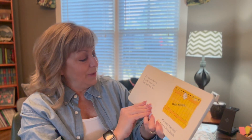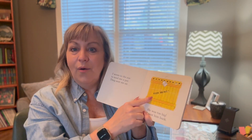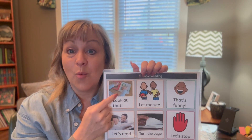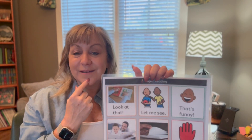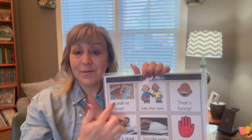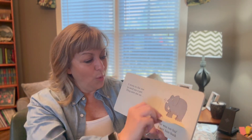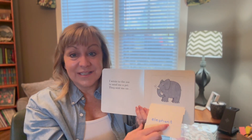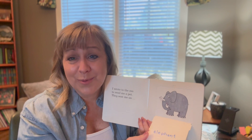So I start reading 'Dear Zoo': 'I wrote to the zoo to send me a pet. They sent me a...' — and now I comment using my communication board: 'Oh, look at that, I wonder what that is.' Then I wait 10 seconds to see if they look at the symbol, look at the book, point to it, or maybe even reach for it — giving them an opportunity to respond. Then we look: 'Oh, it's an elephant!' I wrote the word there to make it more obvious and give us an opportunity to connect text with the image.